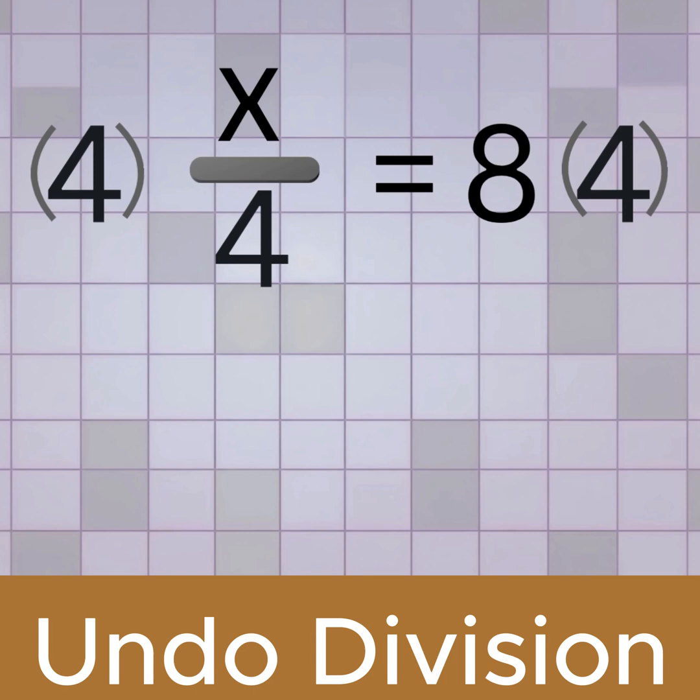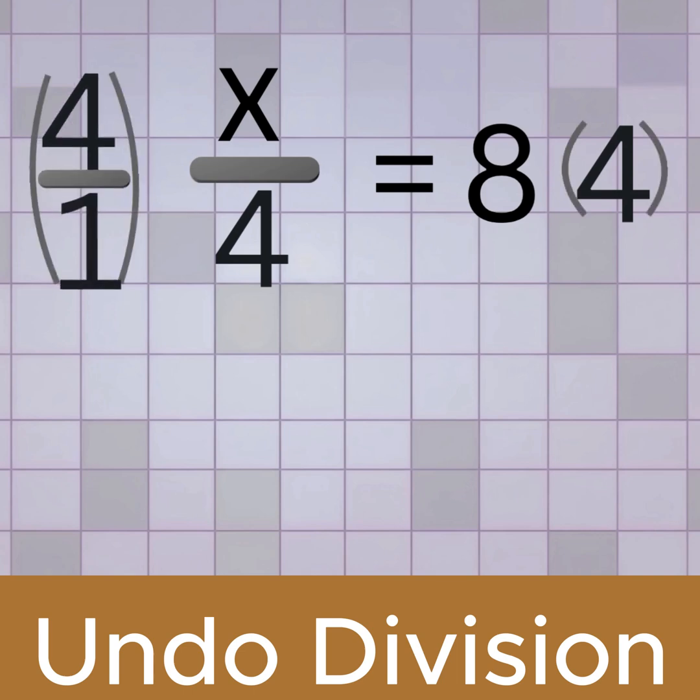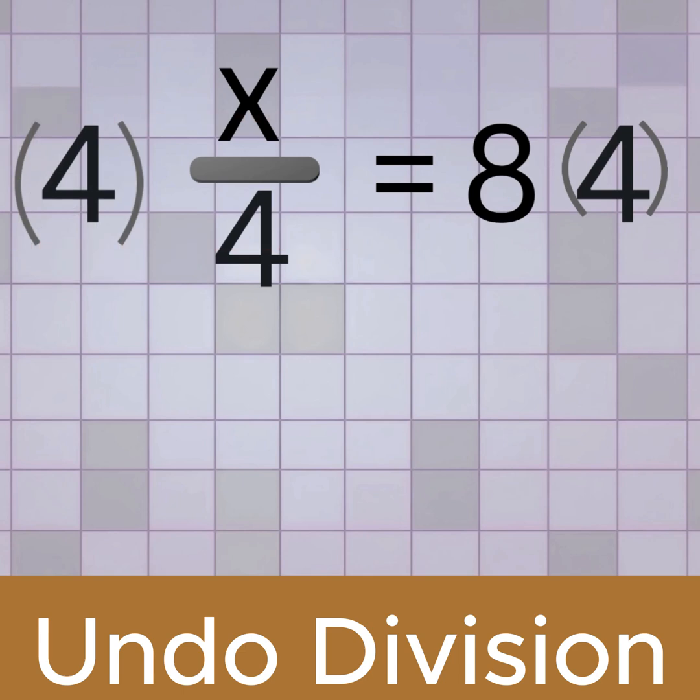On the left side, remember, 4 can be written as 4 over 1, so it's clear that it's in the numerator or on top. The 4's cancel. That leaves just x on the left.